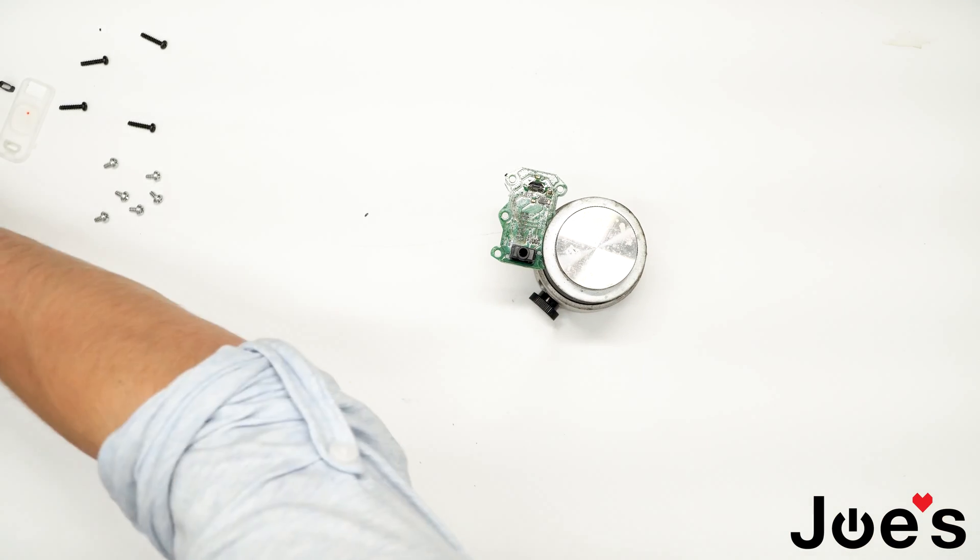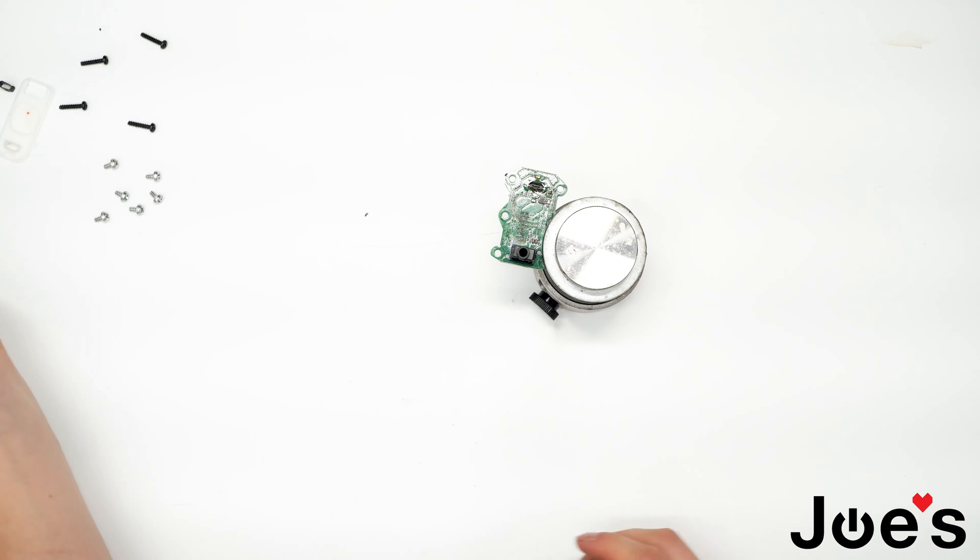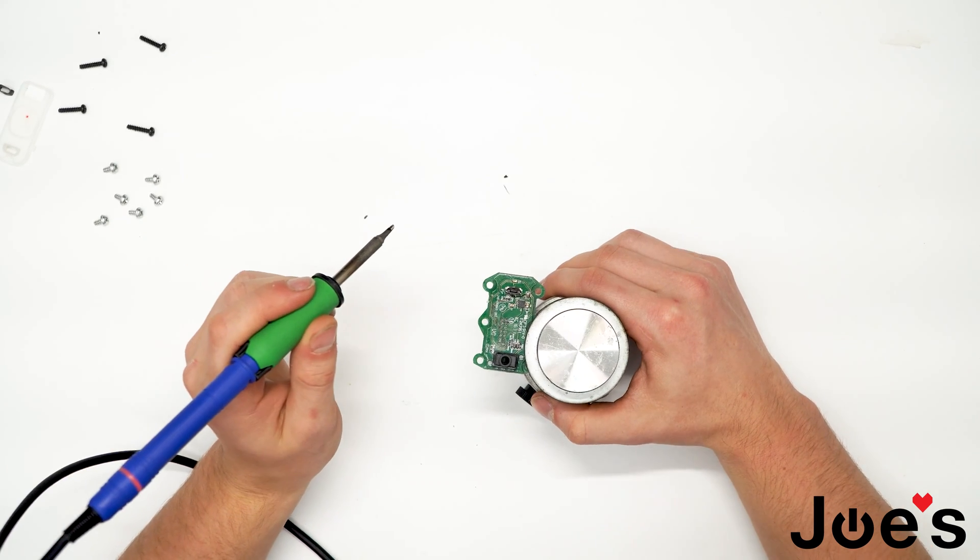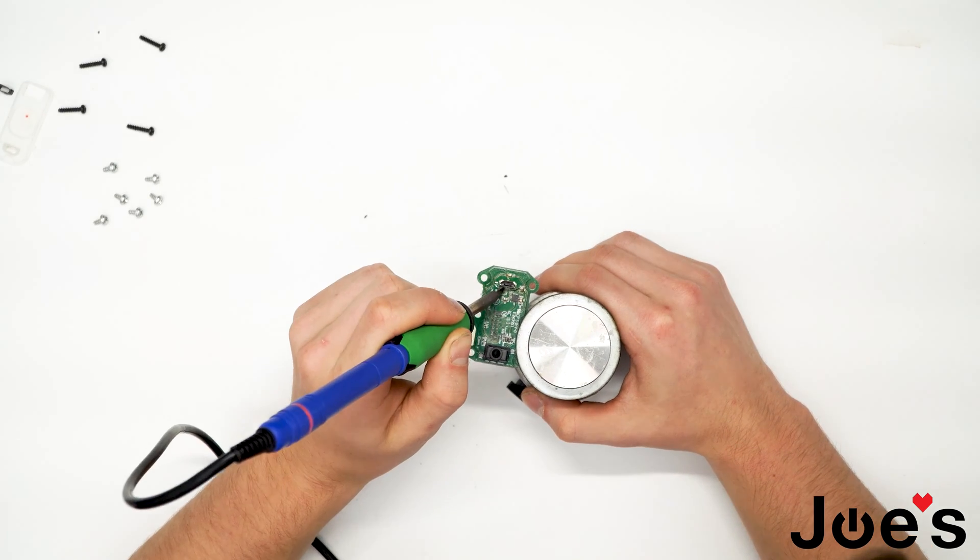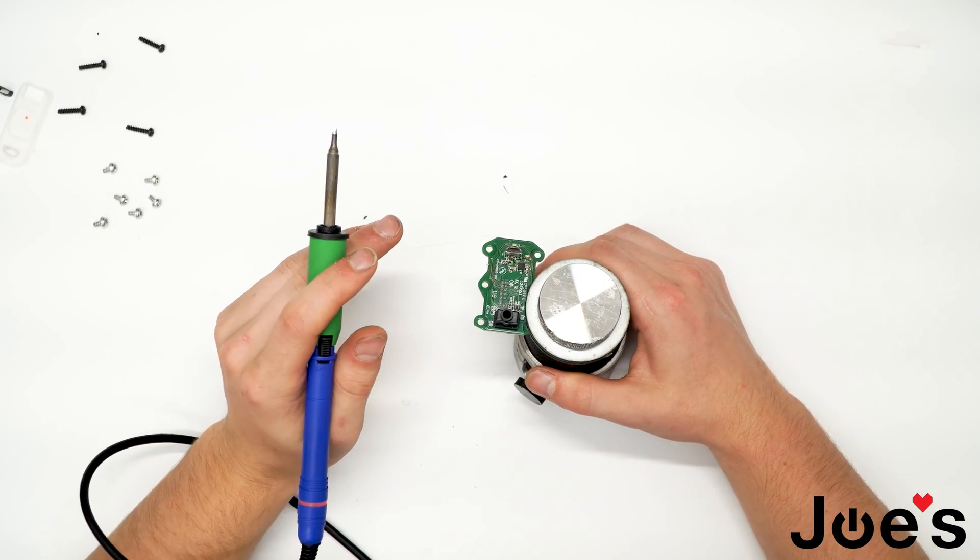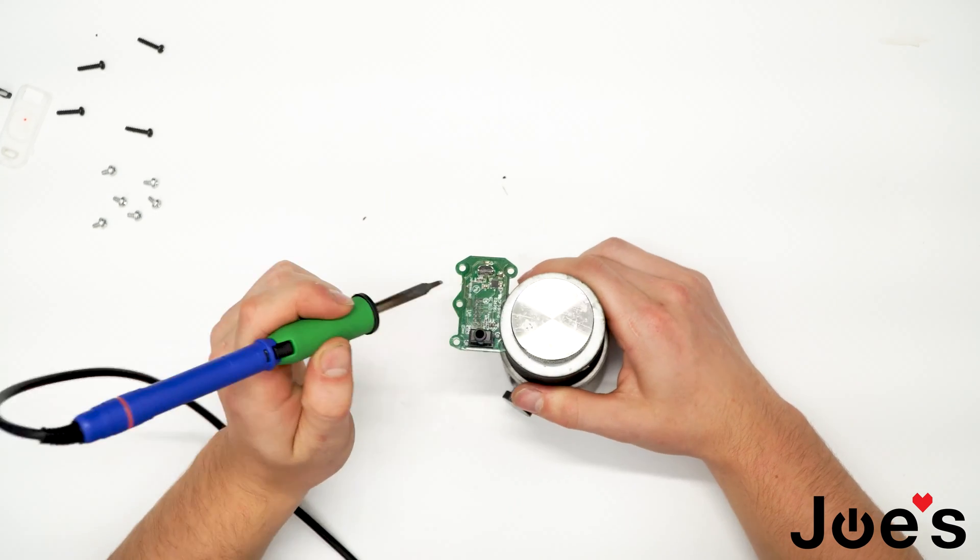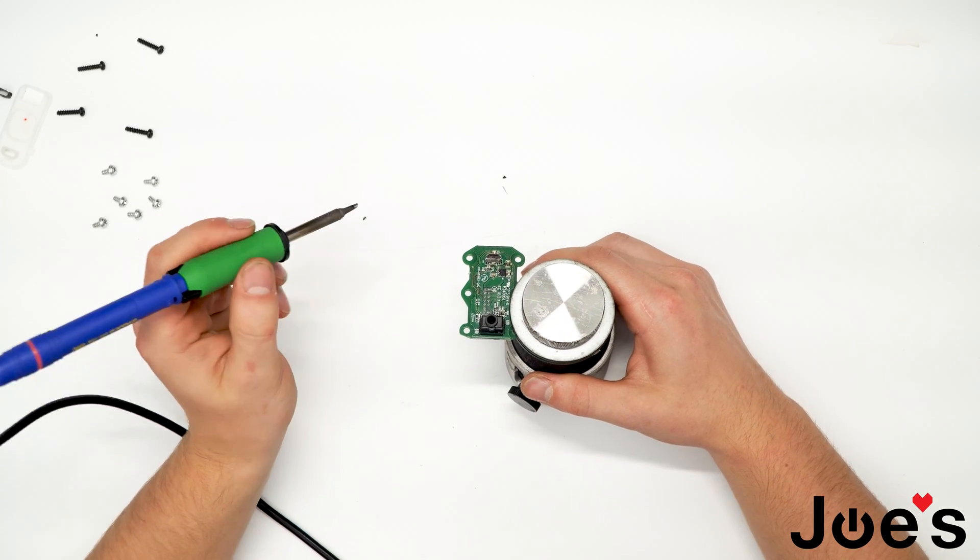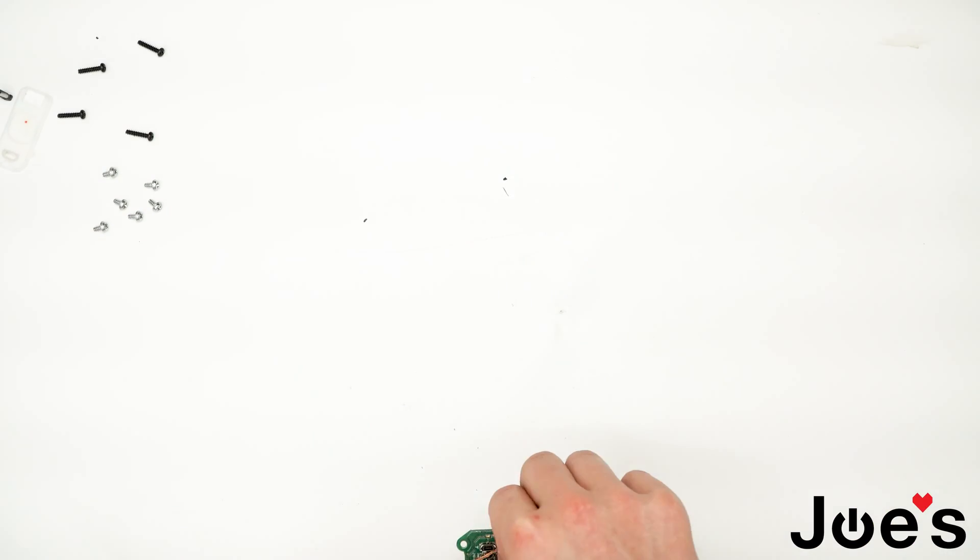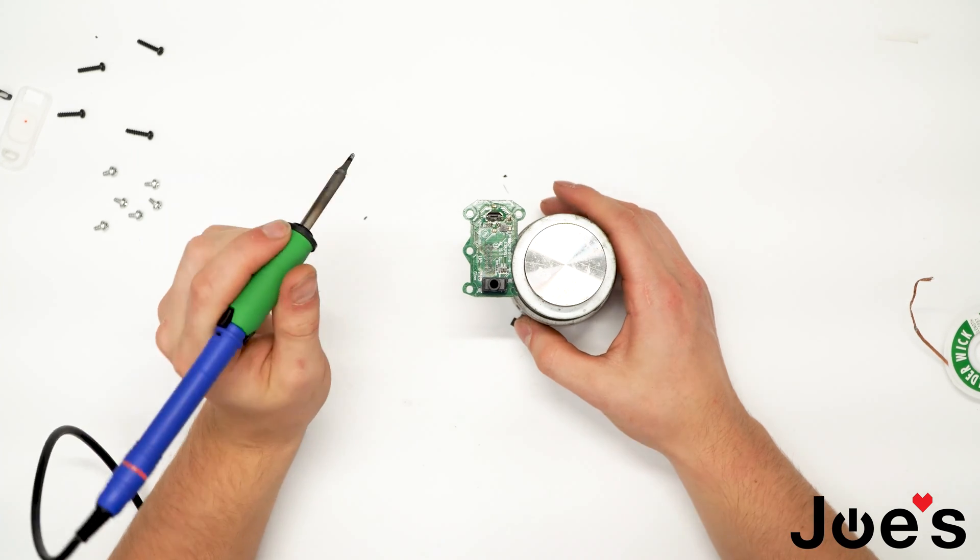And lastly, let's go ahead and solder the pins onto their pads. And like always, be sure not to bridge any of the pins. Now with this port, it does seem like the solder would want to stick onto the actual housing. So be sure to free it up from there. All right, we got each of the pins connected.